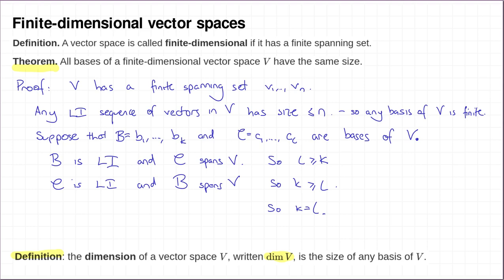It's still true for infinite dimensional vector spaces, but the proof is just a little bit more complicated. In this course, we only care about finite dimensional vector spaces anyway. In fact, I think I've only written down one example of a vector space which was not finite dimensional so far, so see if you can work out which one it was.